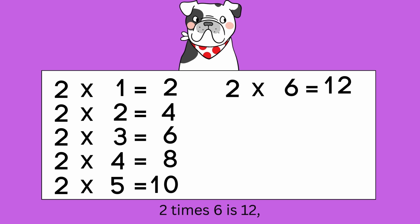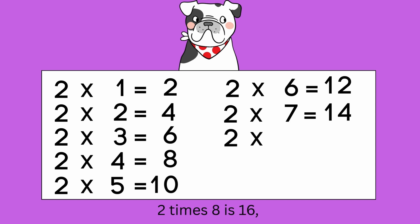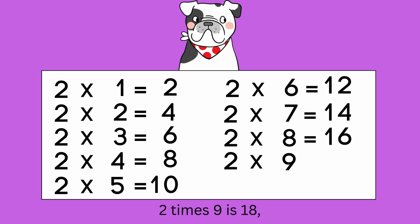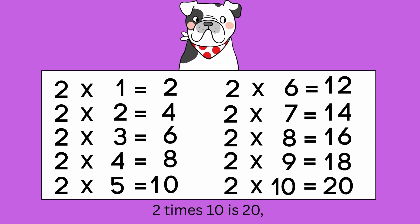Two times six is twelve. Two times seven is fourteen. Two times eight is sixteen. Two times nine is eighteen. Two times ten is twenty.